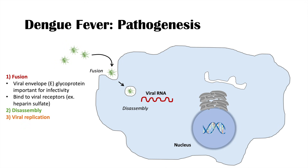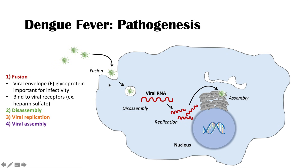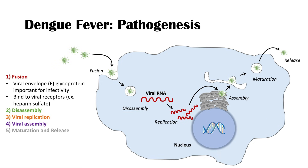Once the viral RNA has been exposed, it can be replicated inside the cell. Once we have enough viral replication, the virus assembles in the ER, or endoplasmic reticulum. It then matures into a virion through the ER and Golgi apparatus, gets packaged again, and is released to infect other cells. From there, it can move to local lymph nodes and lead to viremia — virus in the blood.